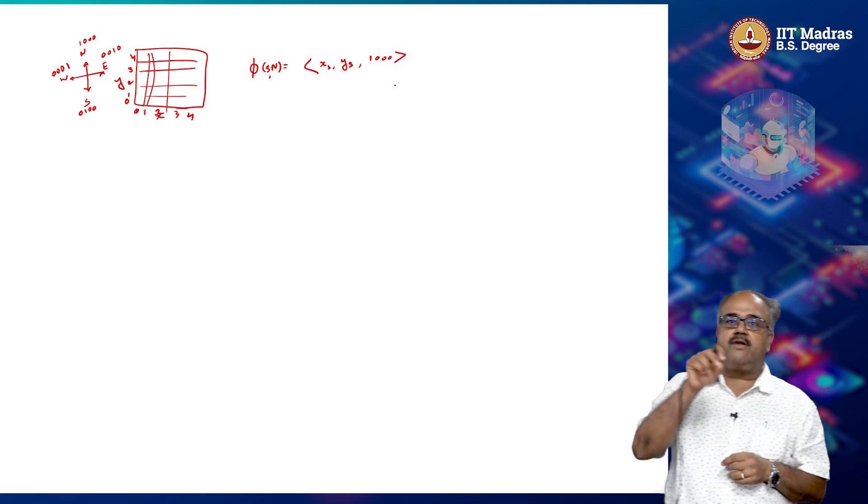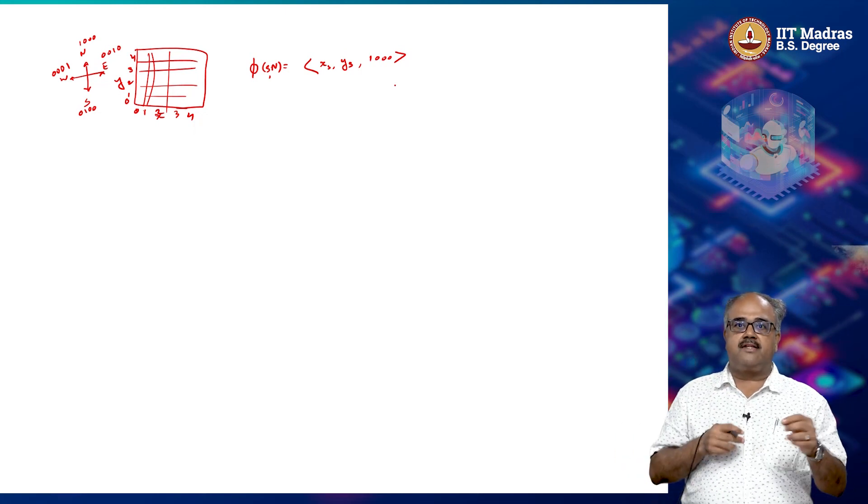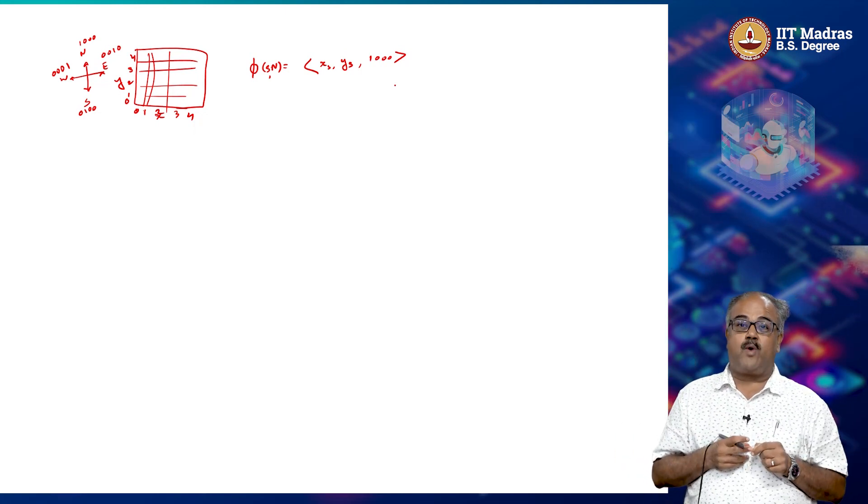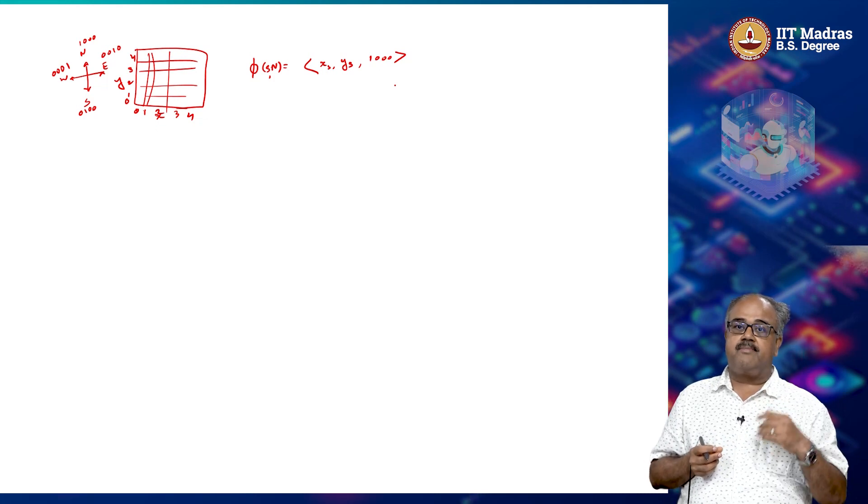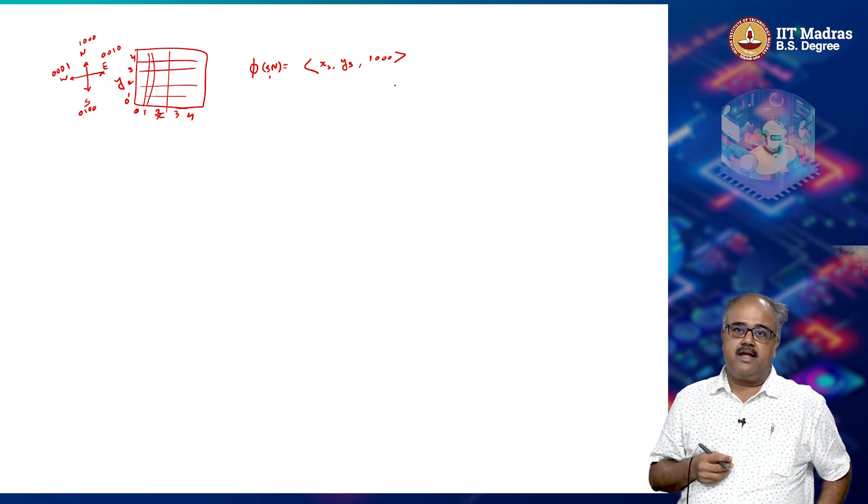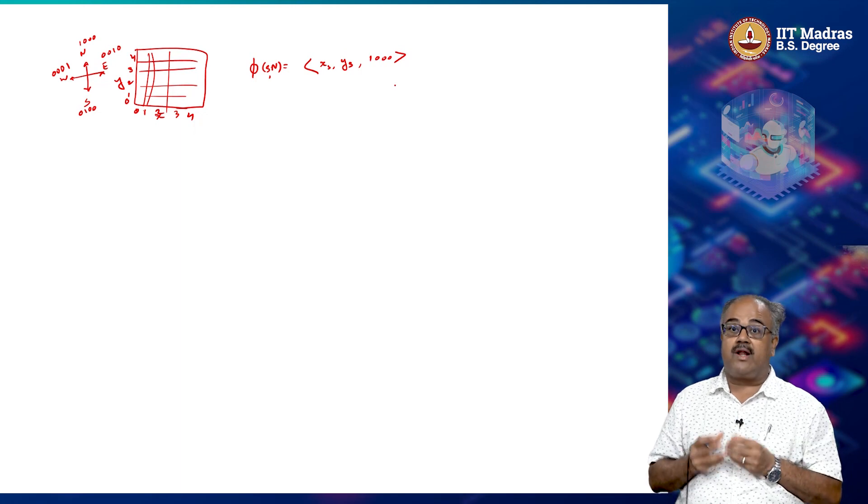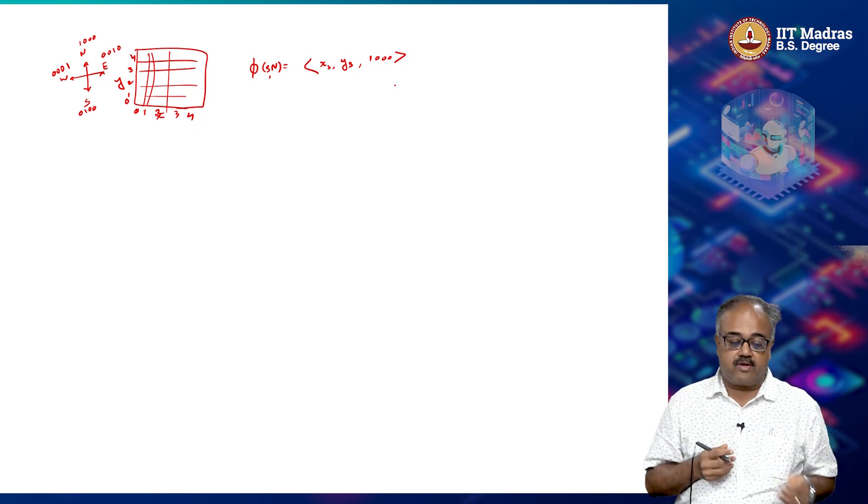So each location in the grid could potentially be represented by the x and y coordinates, and then the actions could be represented by some kind of encoding. In this case I used a 1 of n encoding, must have come across 1 of n.